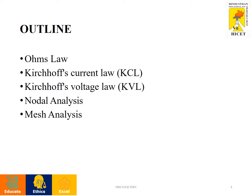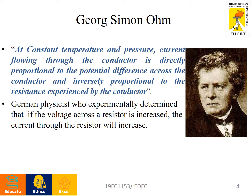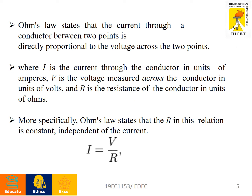The inventor of Ohm's Law is Georg Simon Ohm. Ohm's Law states that at a constant temperature and pressure, the current flowing through a conductor is directly proportional to the potential difference across the conductor and inversely proportional to the resistance experienced by the conductor. He was a German scientist who experimentally determined that if the voltage across a resistor is increased, the current through the resistor will increase.